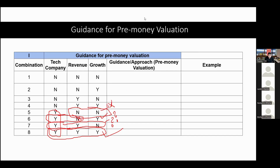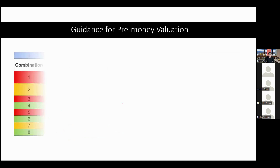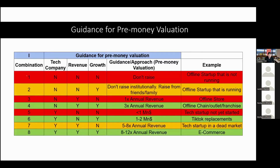To make it even more interesting, we are going to learn with examples. These 8 to 12x axis figures are generally thumb rules. For example, if you are making a revenue of 20 crores per annum, then you can peg your valuation anywhere between 160 to 240 crores, provided you fall into the 8x category.